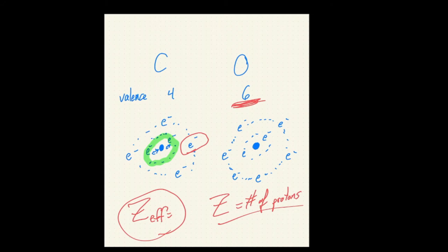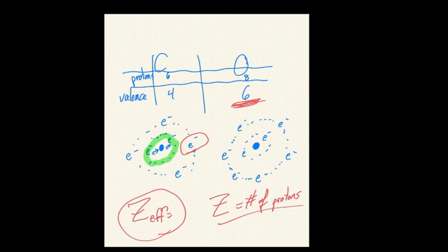The nucleus has a positive charge. For carbon, we're going to have six protons. For oxygen, we're going to have eight protons. The six protons at the center of our carbon are interacting with the core electrons more strongly than they are interacting with the valence electrons. Does that make sense? Yeah.